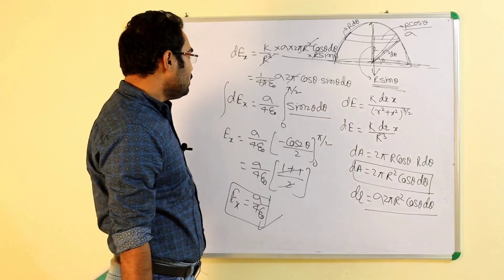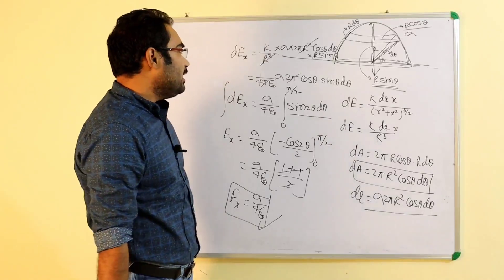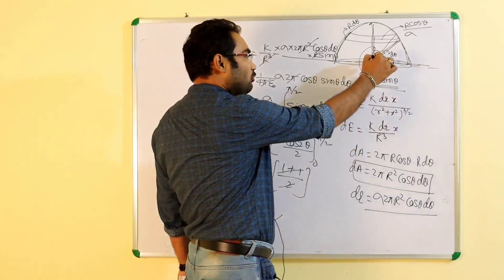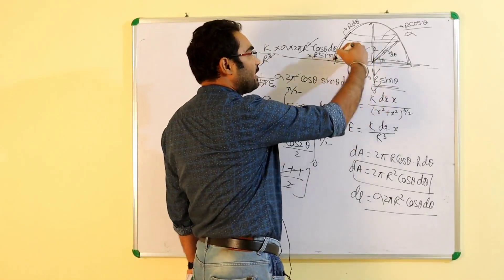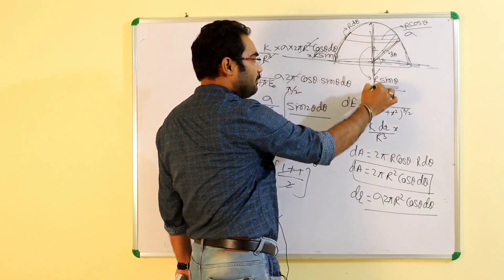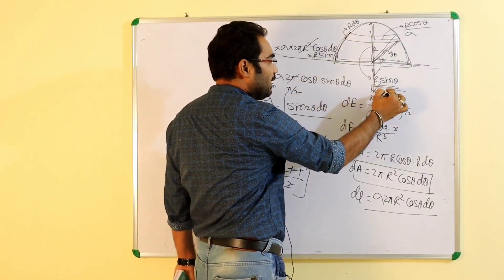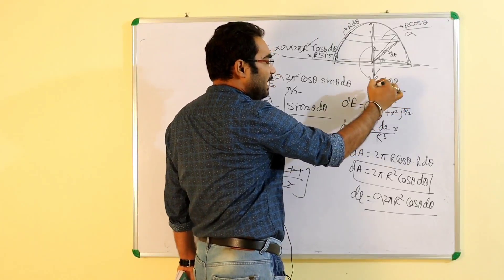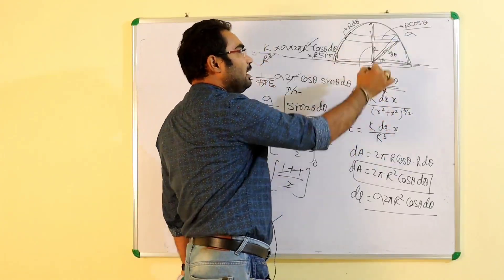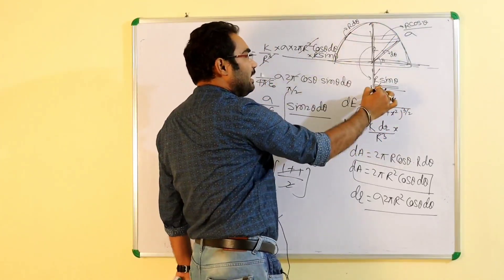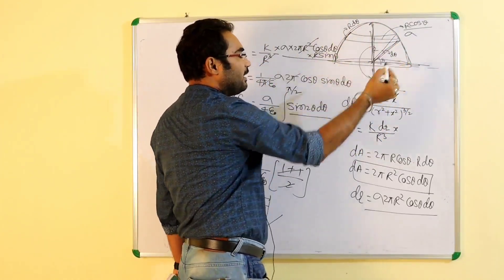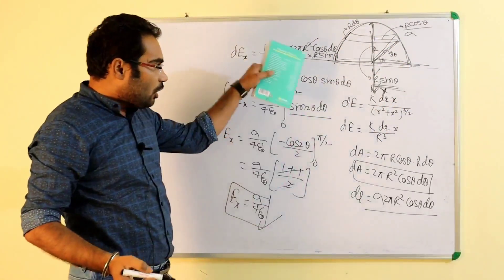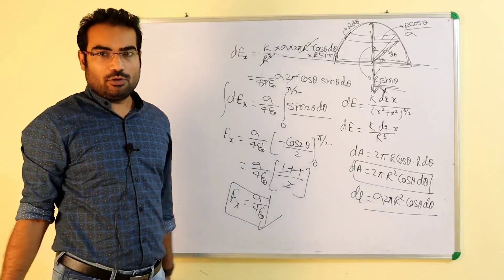Electric field ka value calculate ho gaya. Electric field jo calculate hua hai voh downward hoga — is direction me humne x-axis ko liya hai. Electric field hemisphere ke karan downward direction me hoga.